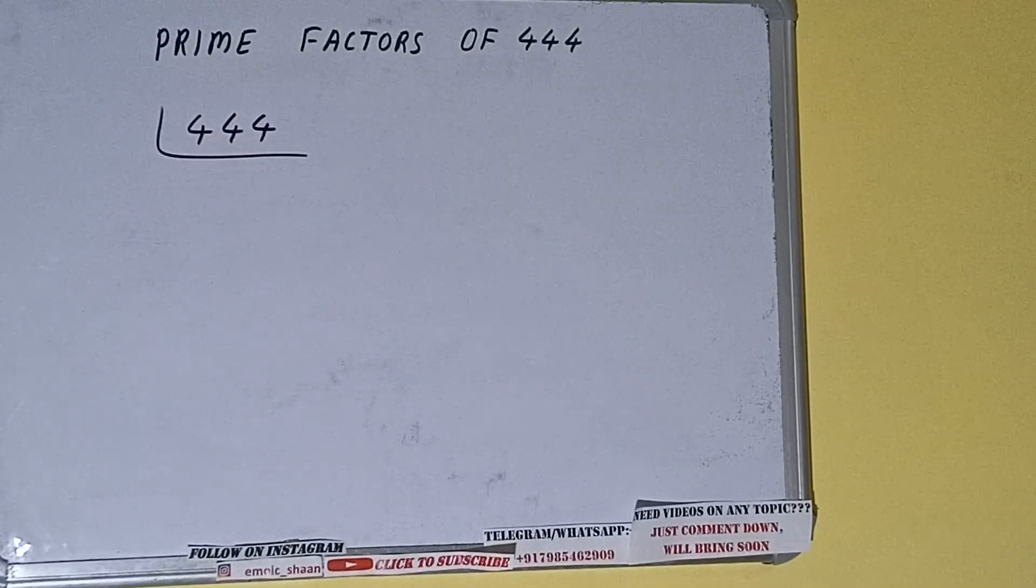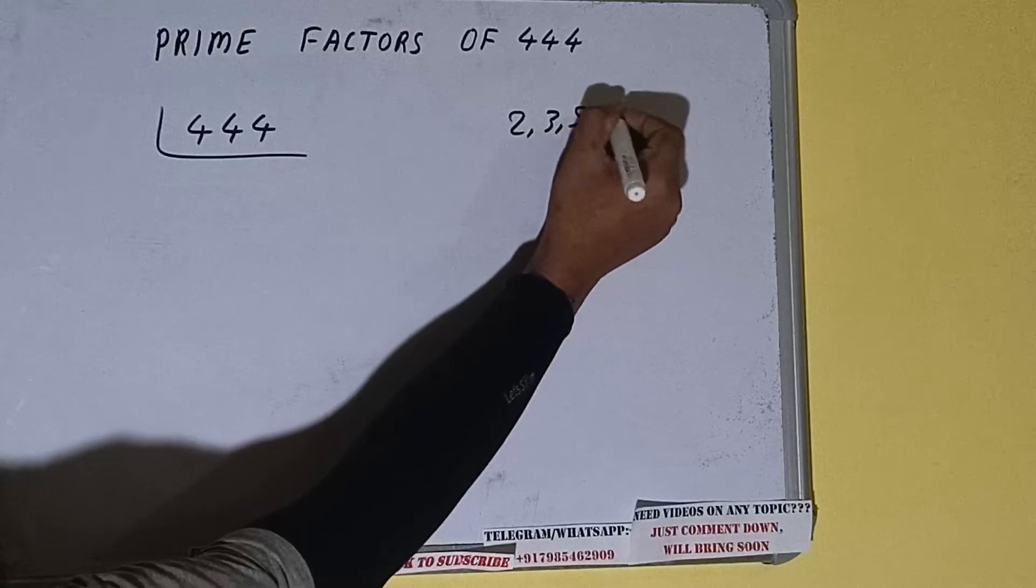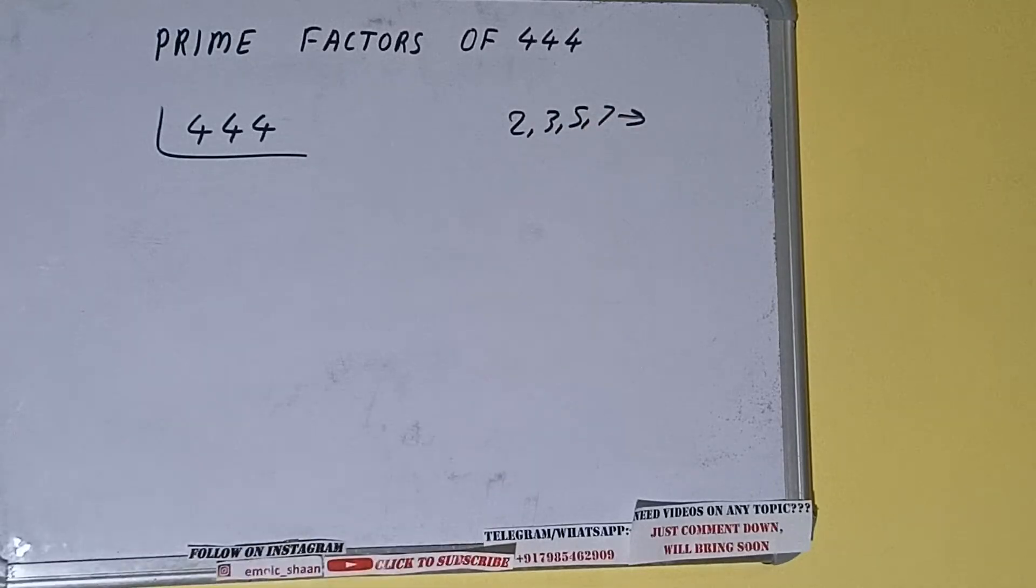Prime numbers are numbers that are divisible by 1 and the number itself, like 2, 3, 5, 7, and so on. Alright, so we'll be checking with the lowest prime number we have.